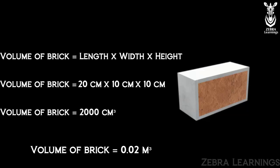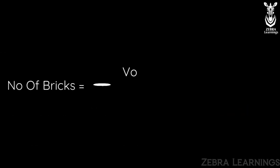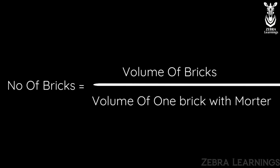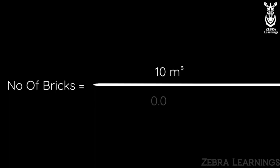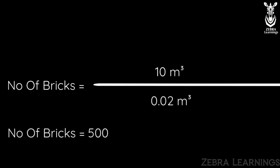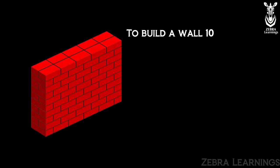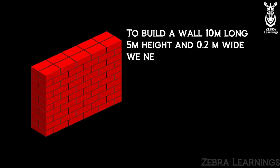We can use all these values in the formula. Number of bricks is equal to volume of wall, 10 m³, divided by volume of the brick with mortar, 0.002 m³. We will get 500 if we divide this. So to build a wall 10 meters long, 5 meters high, and 0.2 meters wide, we need 500 bricks.